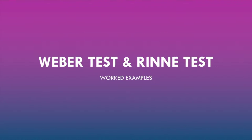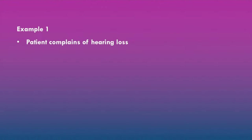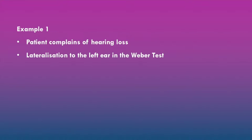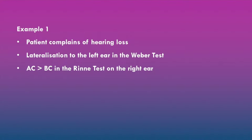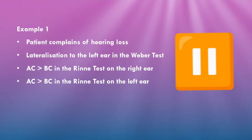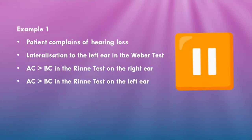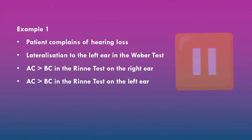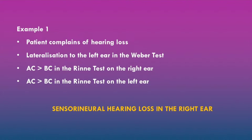In example one, we have a patient who complains of hearing loss. There is lateralization to the left ear in the Weber test. Air conduction is greater than bone conduction in the Rinne test on the right ear, and air conduction is greater than bone conduction in the Rinne test on the left ear. This patient likely has sensorineural hearing loss in the right ear and normal hearing in the left ear.